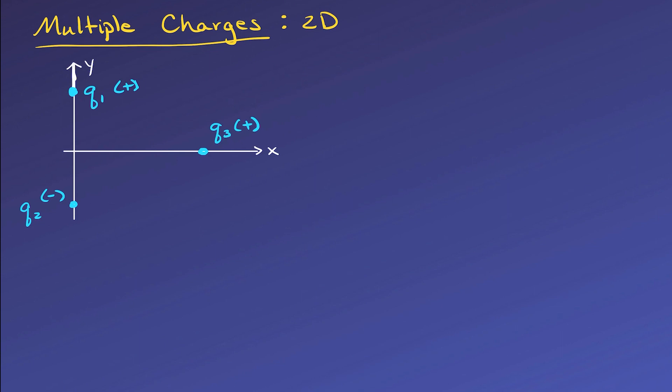Now we still need to take care of the direction first. So we'll draw a free body diagram. Charges q1 and q3 are alike, so q1 will repel q3. Charges q2 and q3 are opposite, so q2 again will pull q3 down, down into the left, along a straight line joining them.